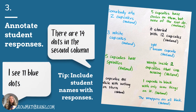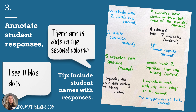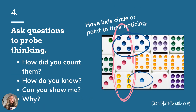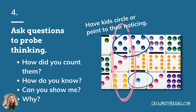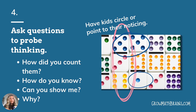Once you ask "how many," you're going to probe their thinking a little bit more and ask questions to get them thinking. Then you're going to annotate responses — write down what students say, exactly what they say. An important tip is to make sure you include their name with their thinking. This shows them that you think their thinking is important and that you value their contribution. A big question I ask is, "How many, and how did you count them?" so they have to explain their thinking. You can also ask, "How do you know?" and have kids come up and circle or point to their noticing.